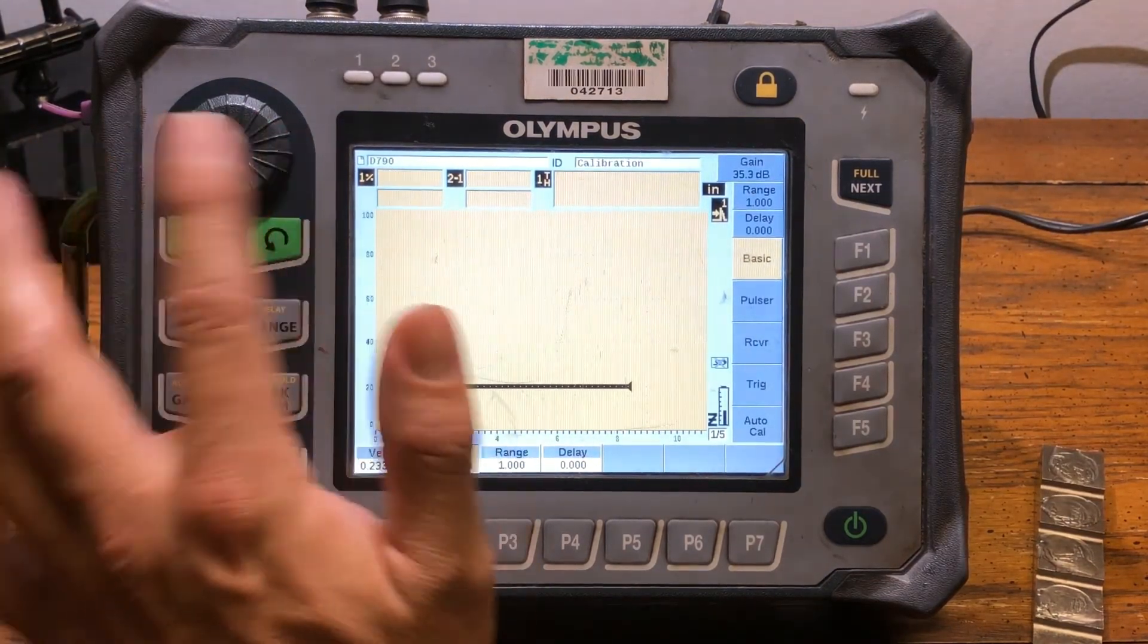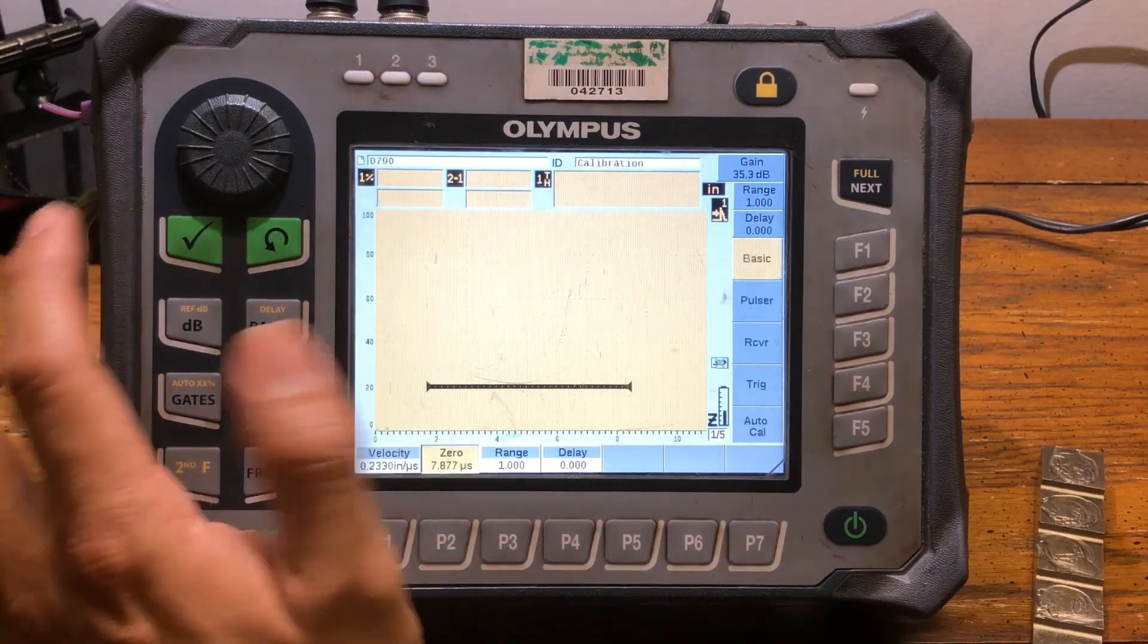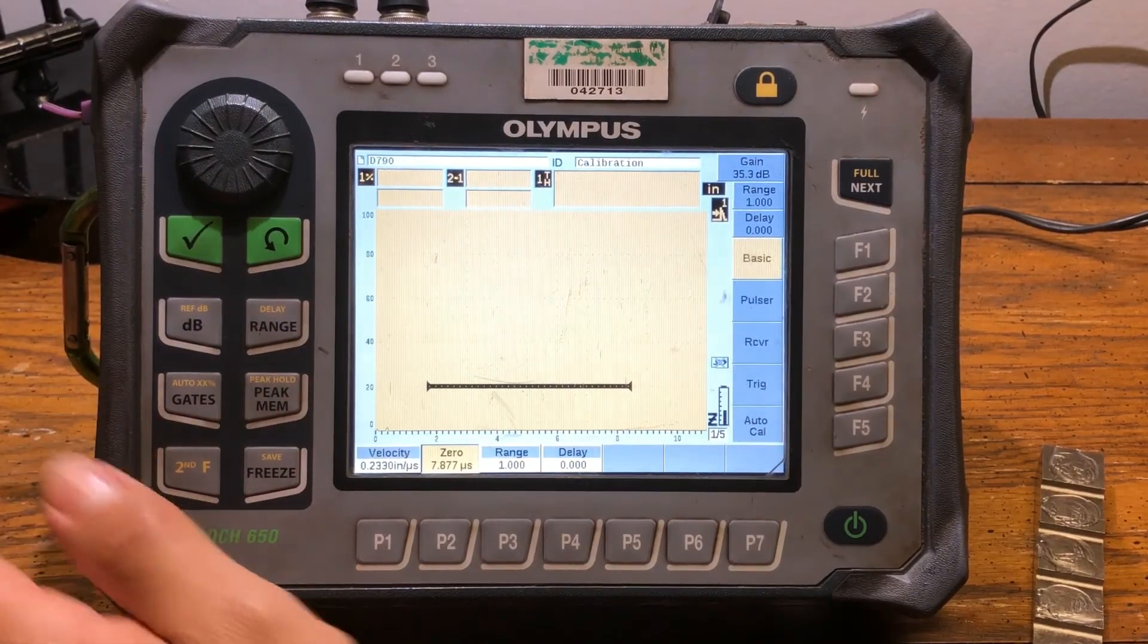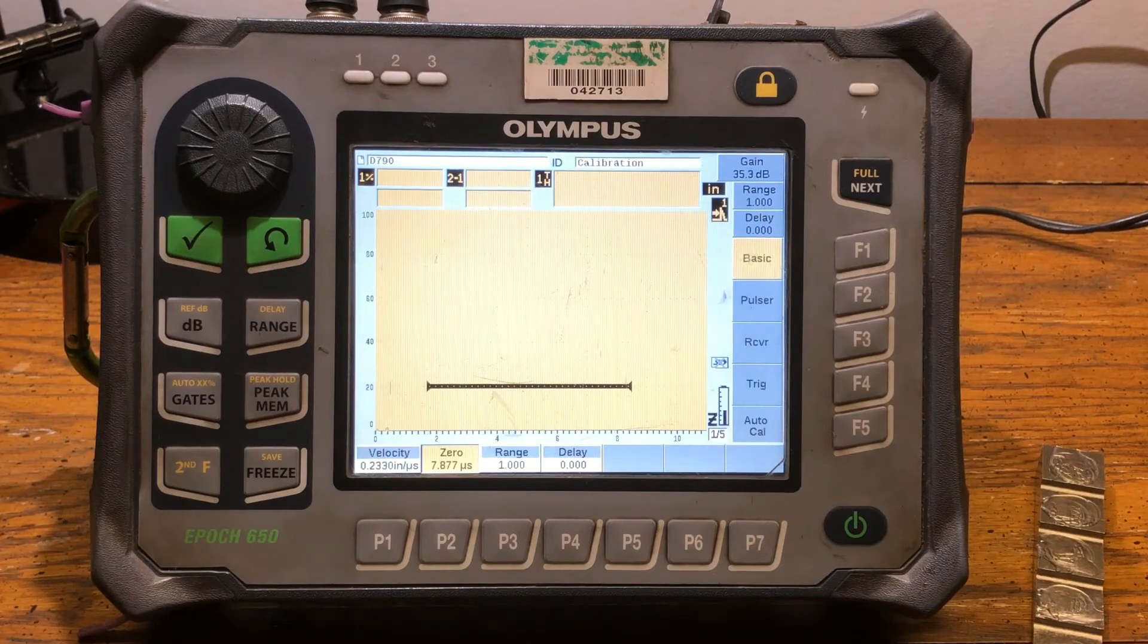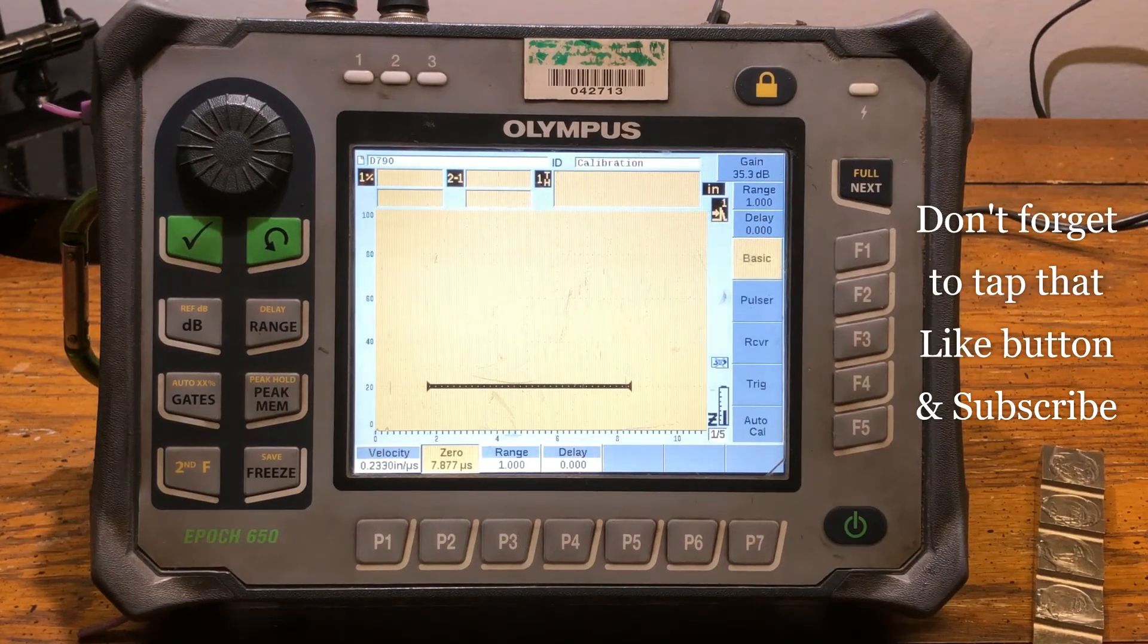Don't scroll too much. Just do it in small increments and you'll be right at where you need to be. And for the next video, I'm gonna show you how to do echo to echo.